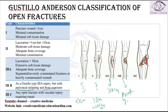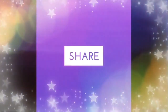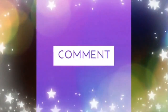According to the Gustilo-Anderson classification, grade 1 and grade 2 are actually treated as closed fractures. Whereas grade 3a, grade 3b, and grade 3c are all treated with external fixation. Thank you for watching.